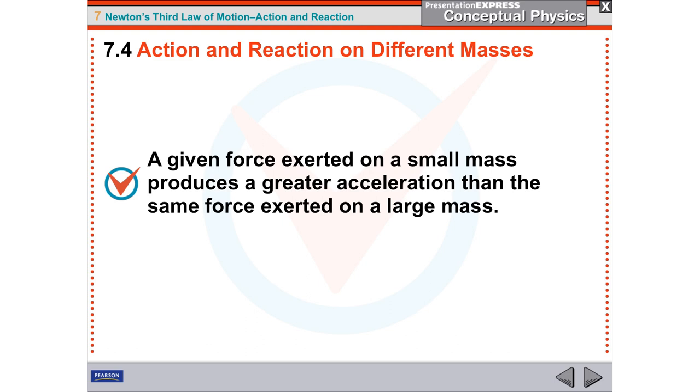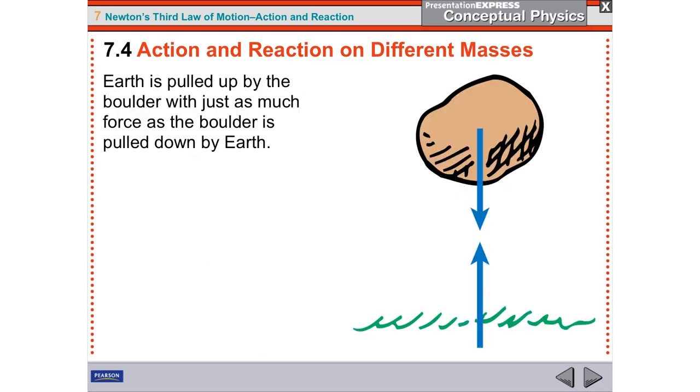So when two objects are interacting with forces of action-reaction, whichever one has the smaller mass will accelerate the more. So let's get some examples. The earth is pulled up by the boulder exactly the same amount as the boulder is being pulled towards the earth.